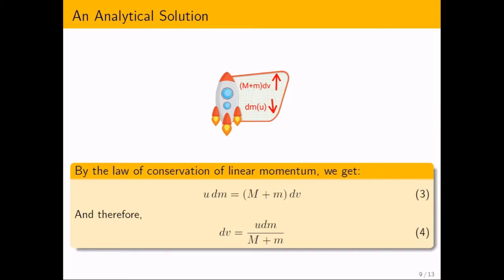By the law of conservation of linear momentum, we get u dm is equal to M plus M dv. And therefore, dv is equal to u dm M plus M.